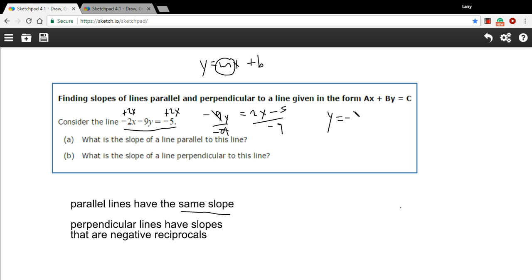That would end up being a negative 2 ninths x. And a negative 5 divided by a negative 9 is a positive 5 ninths. Although we're not really going to concern ourselves with the intercept right here. All we really want is the slope. That is the slope of this line, negative 2 ninths.